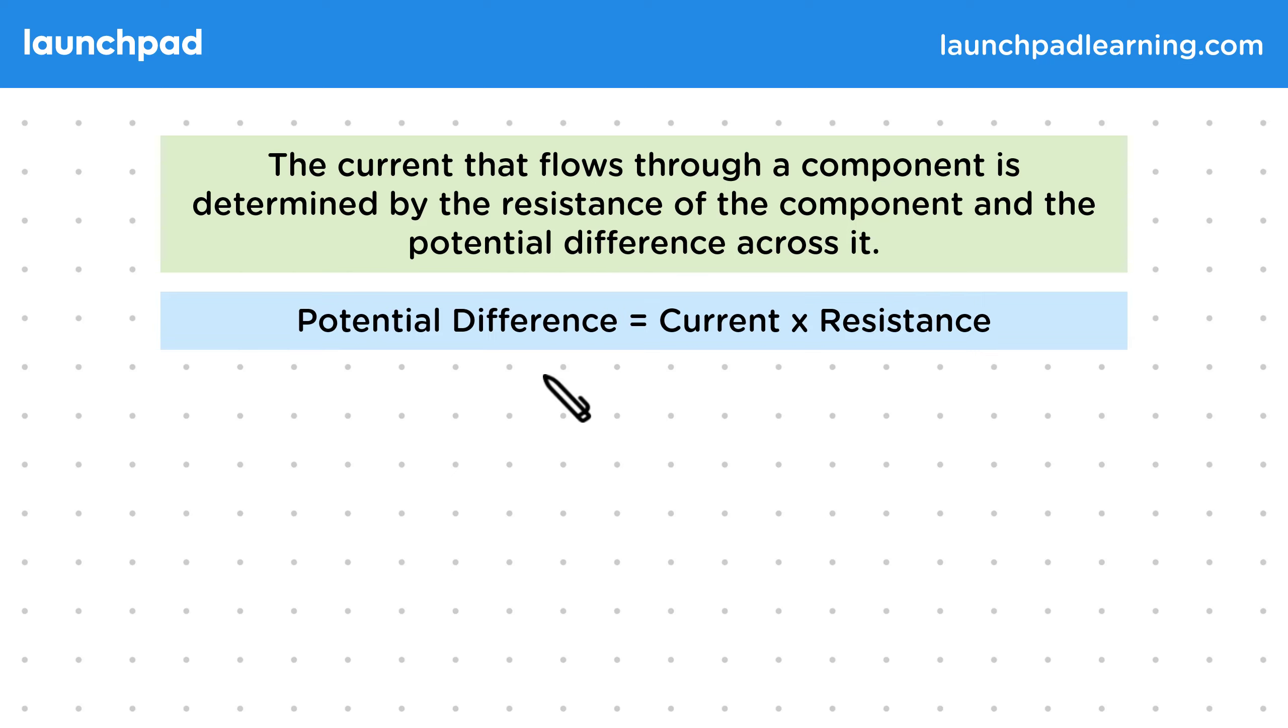As an equation, potential difference is equal to the current multiplied by the resistance, and as symbols that is V equals I times R. This is also known as Ohm's law.